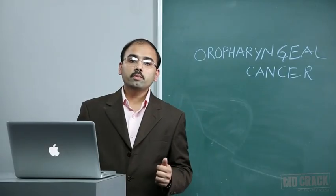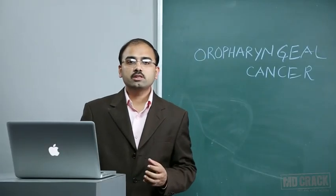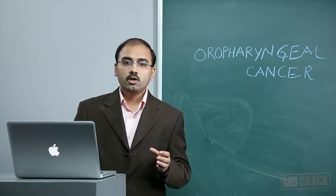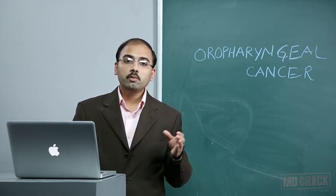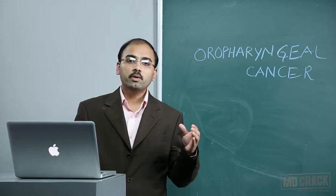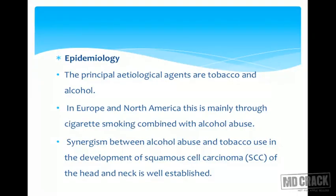We will begin with various malignancies that occur in the oropharyngeal region. This forms a very important part of malignancies arising from the upper aerodigestive tract. First, we will see epidemiology. The principal etiological factors are tobacco and alcohol. In Europe and North America, this is mainly through cigarette smoking combined with alcohol abuse. The synergism between alcohol abuse and tobacco leading to development of squamous cell carcinoma in the head and neck is well established.